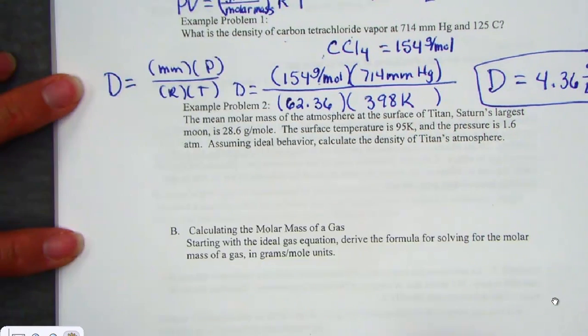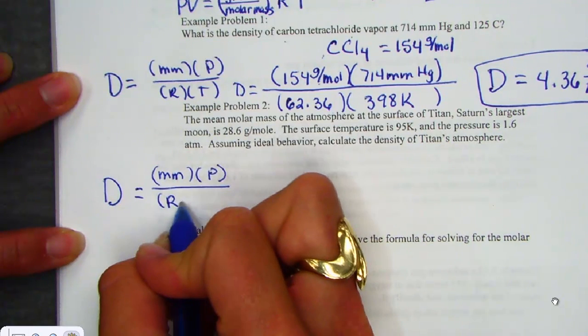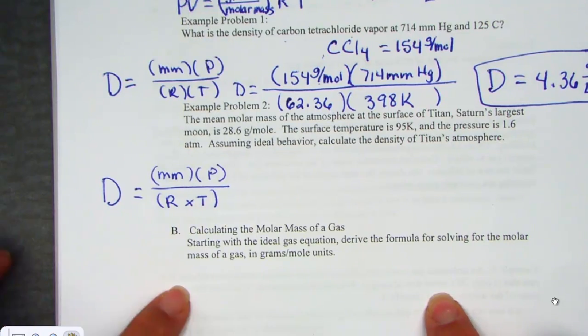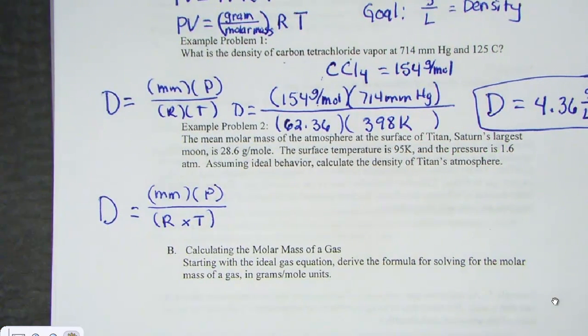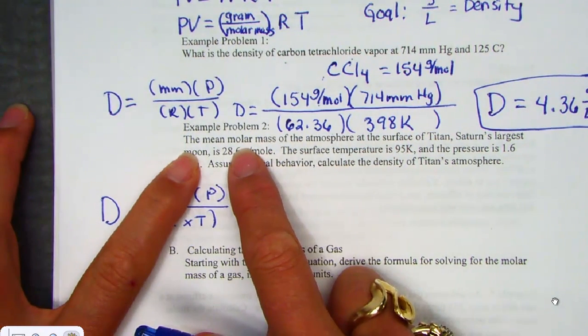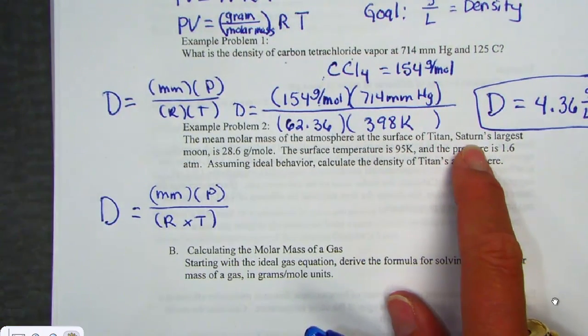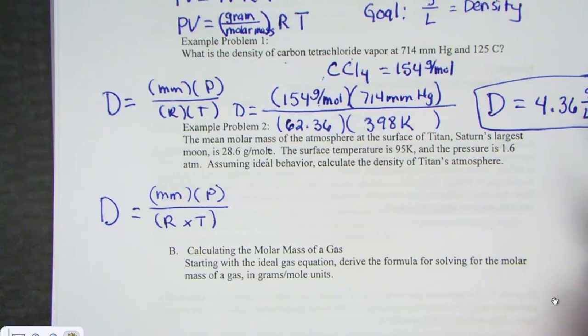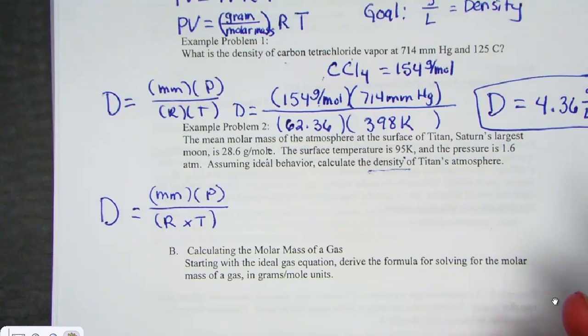Allison, let's read through example two. The mean molar mass of the atmosphere at the surface of Titan, which is Saturn's largest moon, is 28.6 grams per mole. That gram per mole is telling us the molar mass of this particular atmosphere around Saturn. Surface temperature given in a Kelvin unit of 95, the pressure's 1.6 atmosphere. We'd like to calculate density of the atmosphere around Titan.